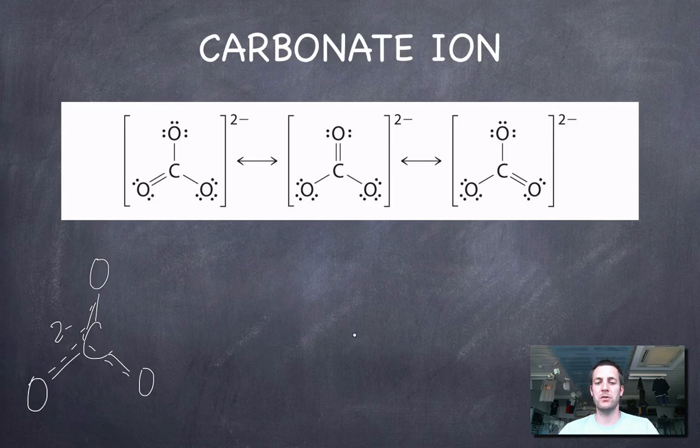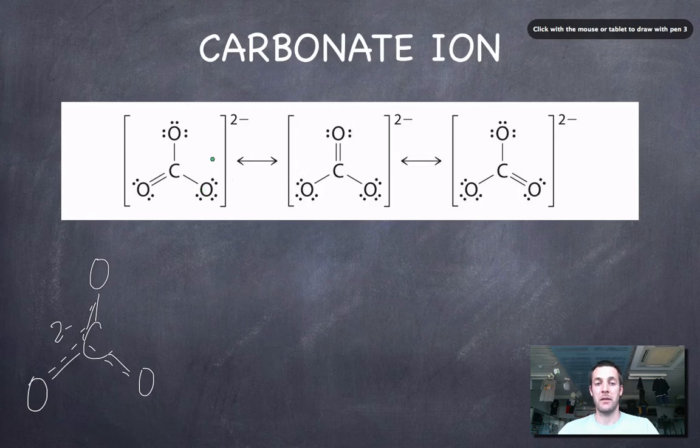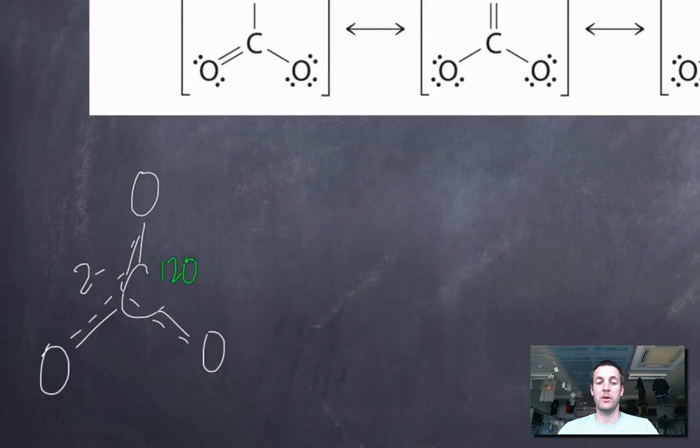What I thought it might be useful to do quickly would be to just have a look at the hybridization of these two atoms, the carbon and the oxygen, and to think about how the orbitals that are being used might explain how this delocalization is taking place. Now we've got 120 degrees around the carbon, we've also got 120 degrees around the oxygen. This means they're using sp2 hybrids.